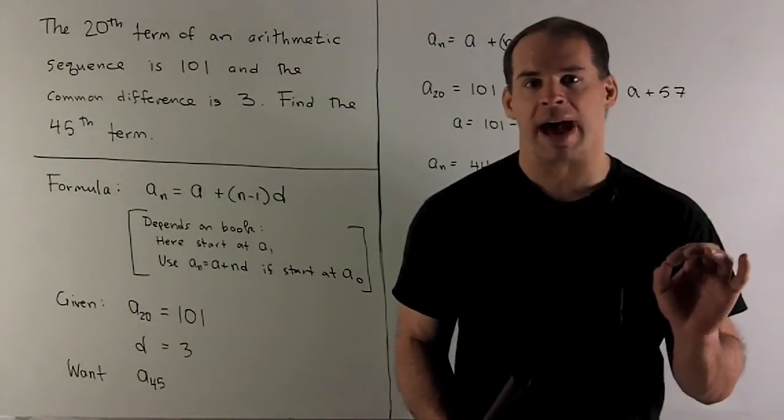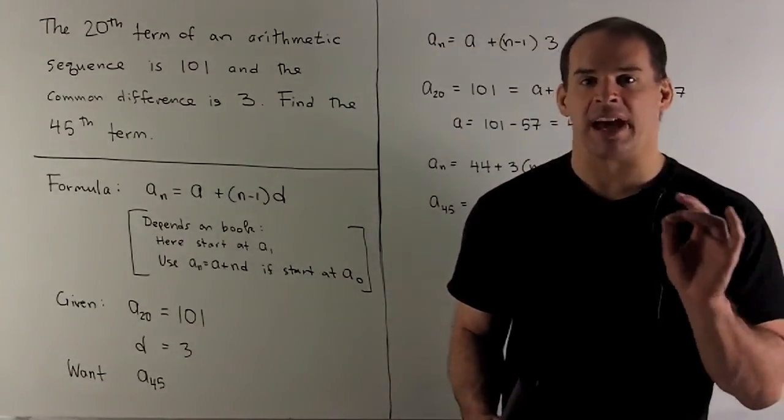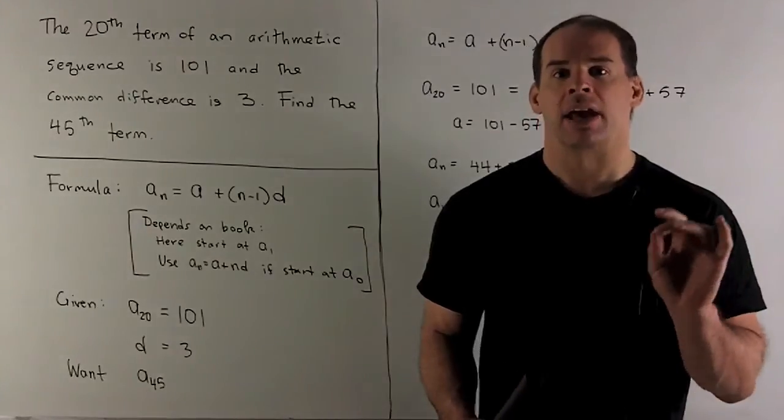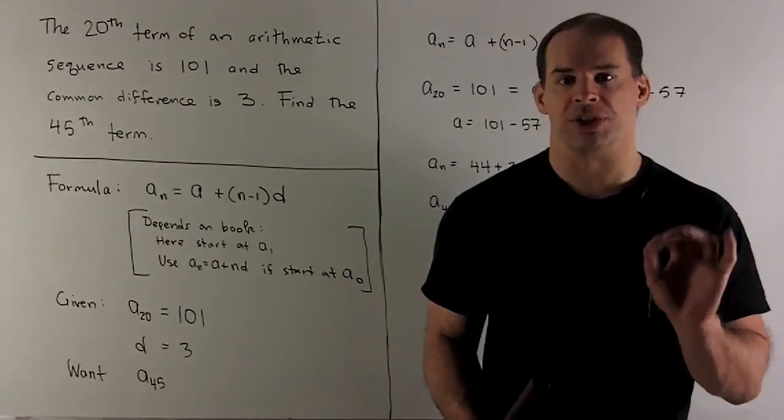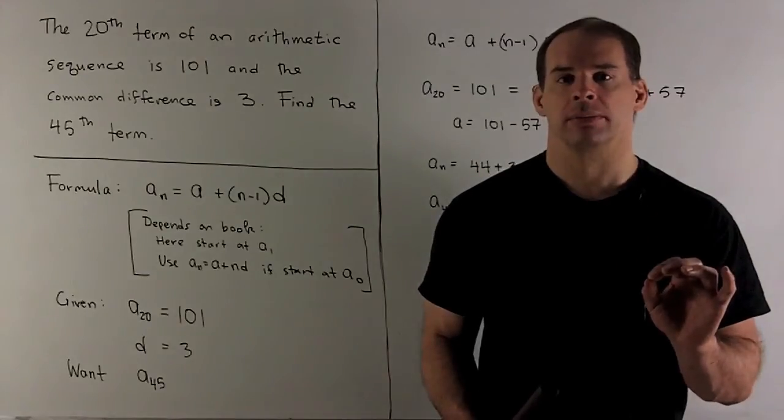that case your formula is given by a_n equals a plus n times d. And in that case you still have first element a, common difference d, just start with 0 instead of 1, so you adjust accordingly. Now